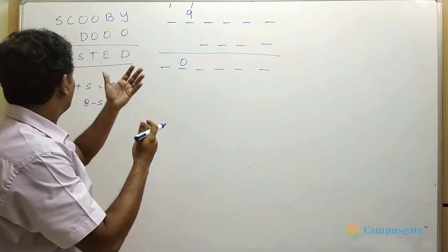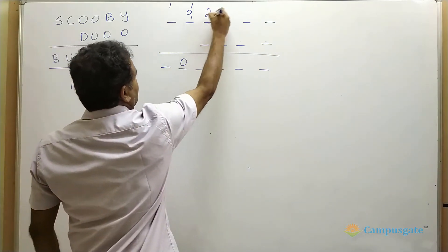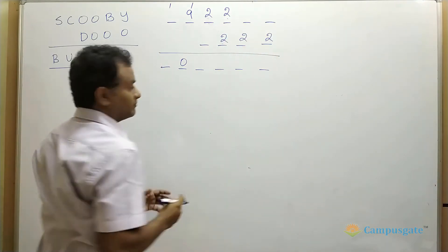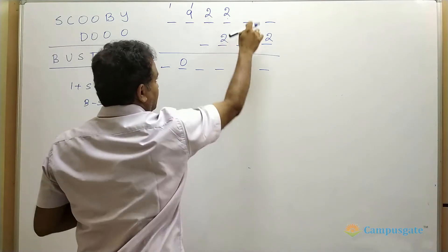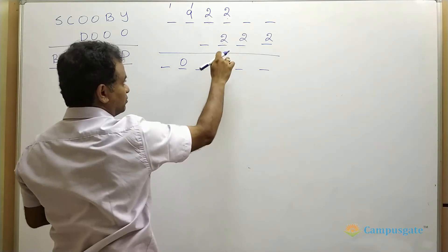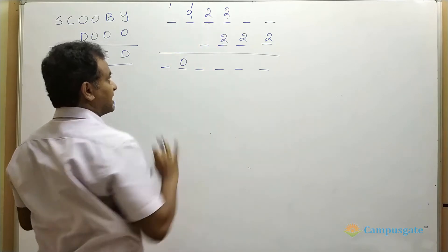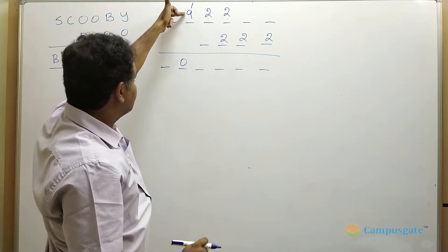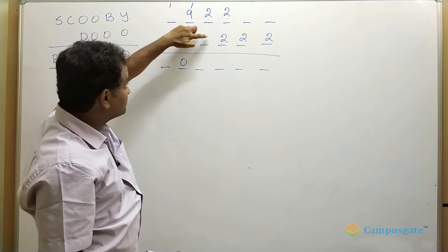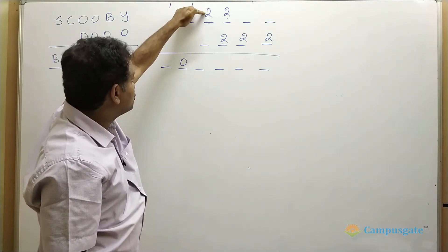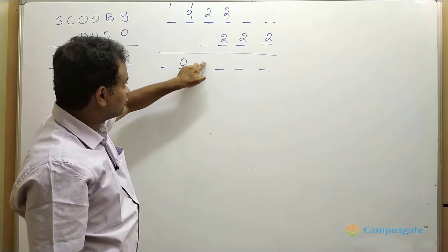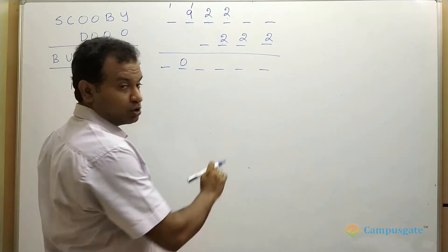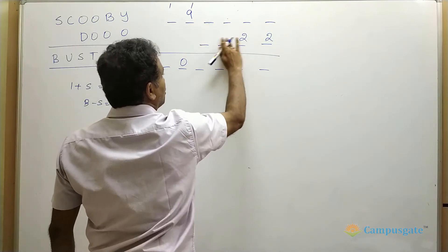Let us take O equal to two. Again, two plus two equals a maximum of four or five — there is a carry from the column. This number should be eight: eight plus two equals ten, giving zero here. But zero we have already assigned to U, so this is also not a proper case. Two is also ruled out.